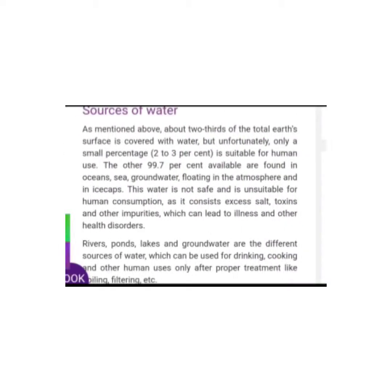Now, sources of water. About two-thirds of the total earth surface is covered with water, but unfortunately only a small percent — about 2 to 3 percent — is suitable for human use. The other 97 to 98 percent is found in oceans, seas, groundwater, glaciers, and the atmosphere. Sources like rivers, lakes, and groundwater can be used for drinking, cooking, and other human uses.